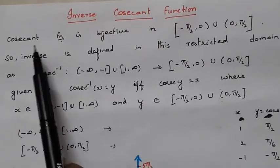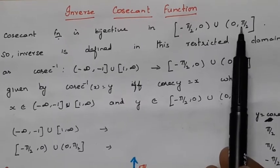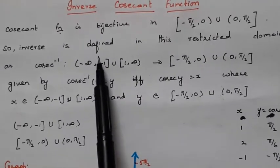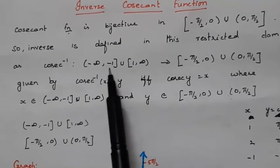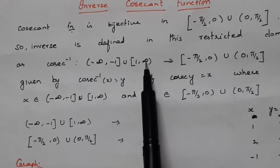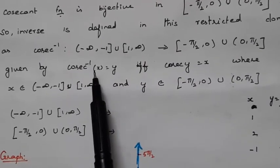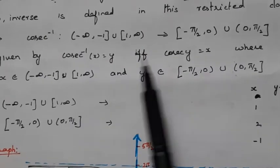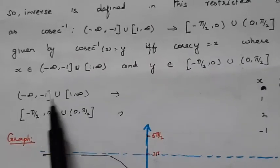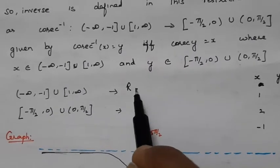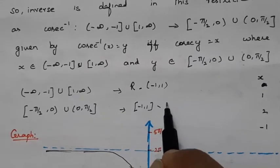The cosecant function is bijective on [−π/2, 0) ∪ (0, π/2]. We can define cosecant inverse as a function from (−∞, −1] ∪ [1, +∞) — which is R minus the open interval (−1,1), or equivalently the closed interval [−1,1] minus {0} — to [−π/2, 0) ∪ (0, π/2], given by: cosecant⁻¹(x) = y if and only if cosecant(y) = x.